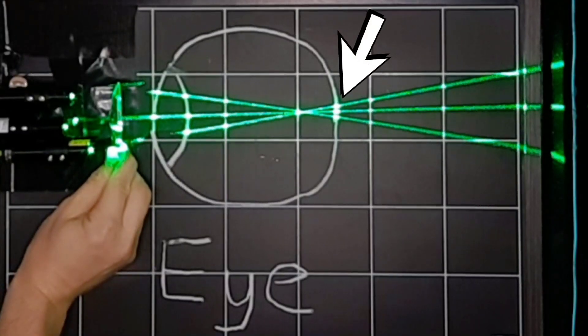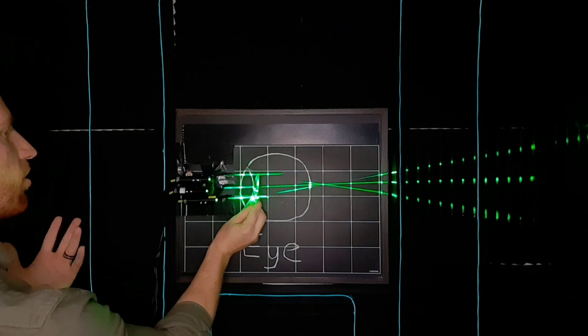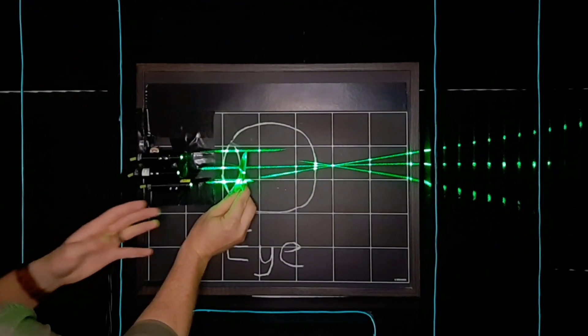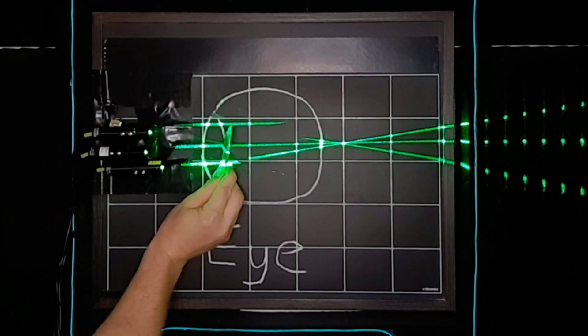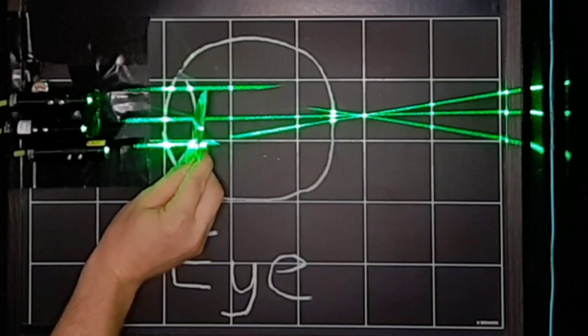So now what's hitting the retina is spread out and your vision becomes blurry. Or that direction of your vision could be farsighted, where it doesn't bend the light sharply enough. So your eye tries to focus that light outside of your eye, but you can see again that what actually hits your retina is a spread out version of that spot, and that would again make your vision blurry.